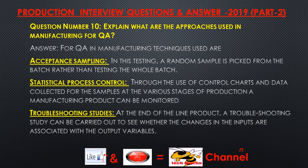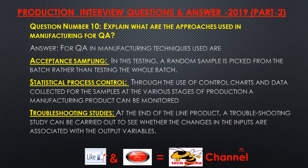Question number ten: Explain what approaches are used in manufacturing for CAW. Answer: For CAW, manufacturing techniques used include acceptance sampling, where a random sample is picked from a batch rather than testing the whole batch. Statistical process control uses control charts and data collected from samples at various stages of production. Troubleshooting studies can be carried out at the end of the production line to see whether changes in inputs are associated with output variables.